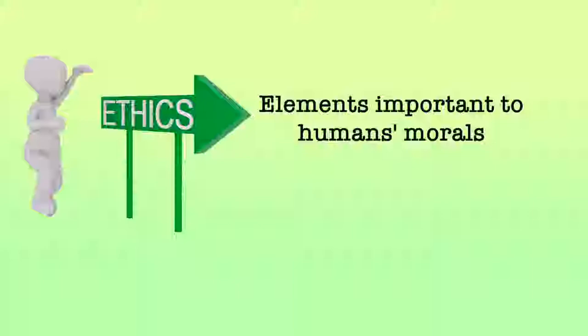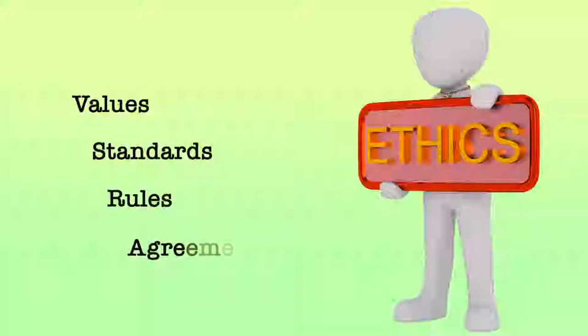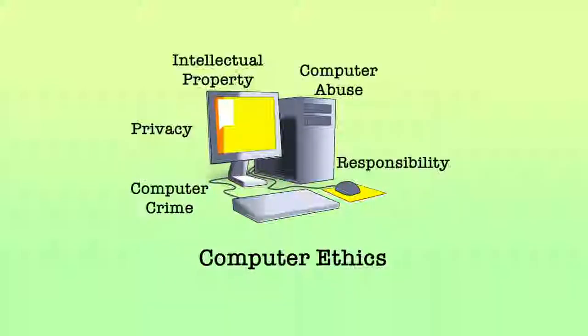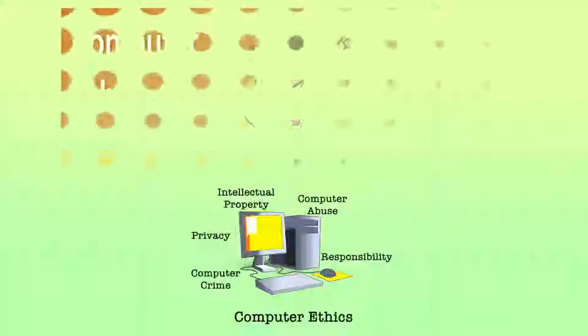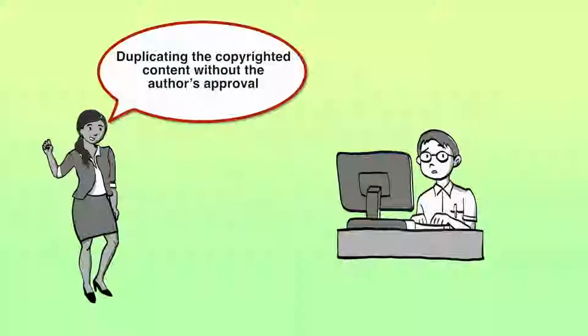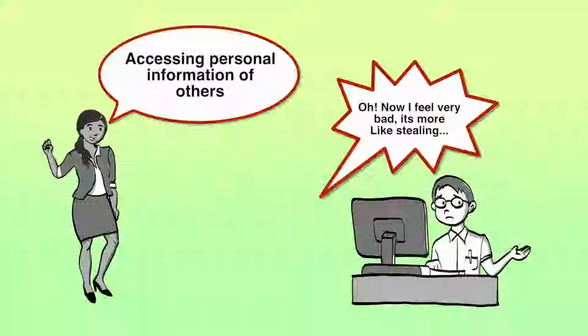The general definition of the word ethics defines the elements important to human morals. Ethics could be referred to as specific values, standards, rules, and agreements. Computer ethics are a set of moral principles that govern an individual or a group on what is acceptable behavior while using a computer. One of the common ethics missed by many is violation of copyright issues. Publishing copyrighted contents without the author's approval and accessing personal information of others are some examples that violate ethical principles.